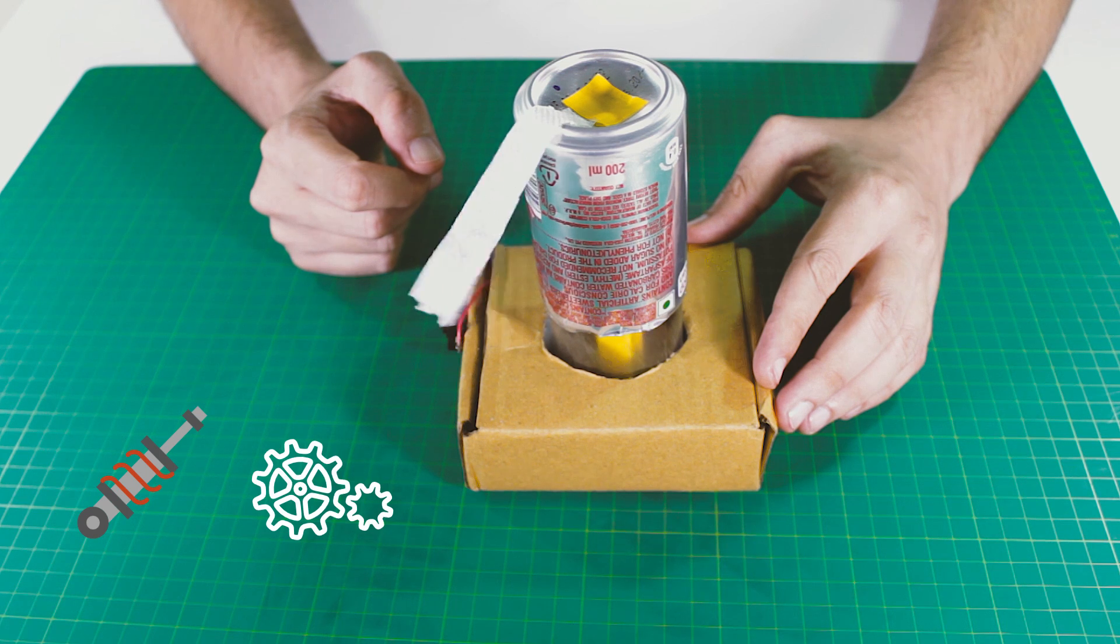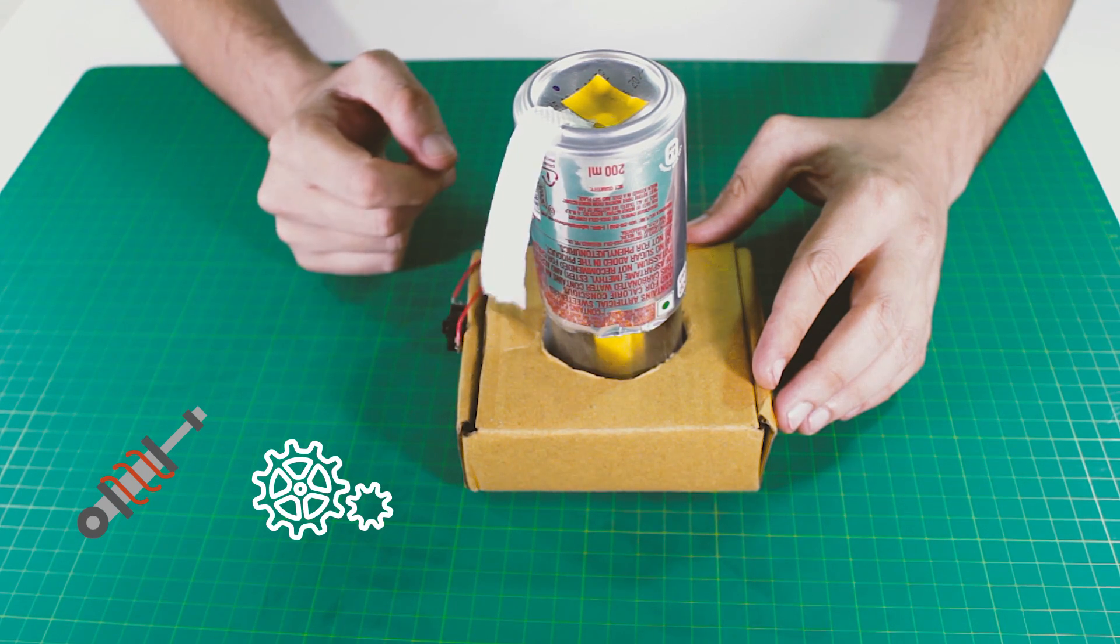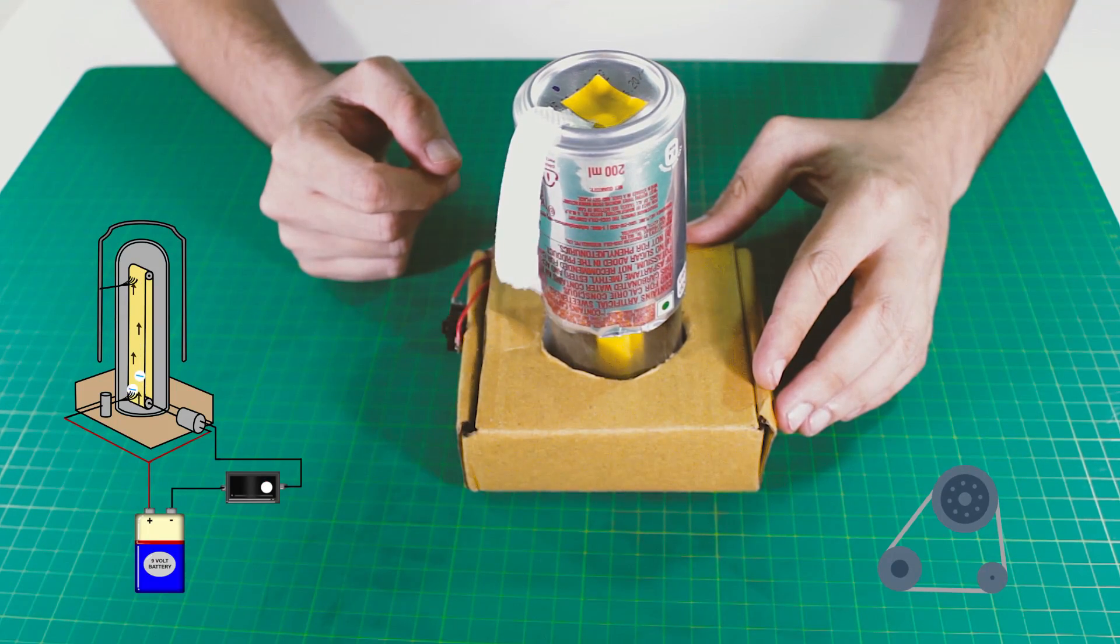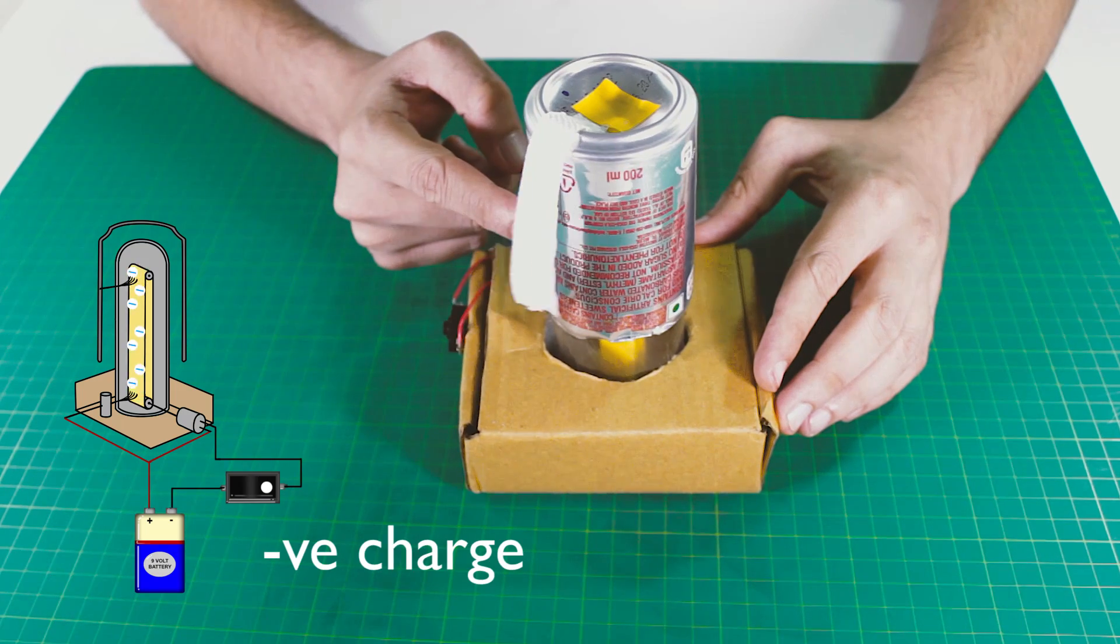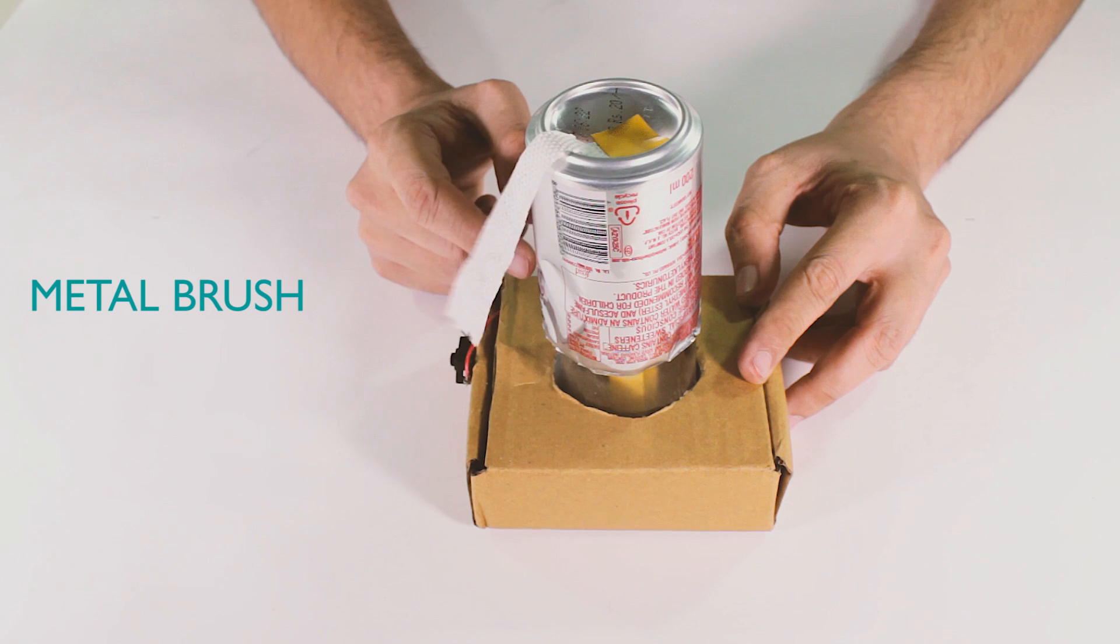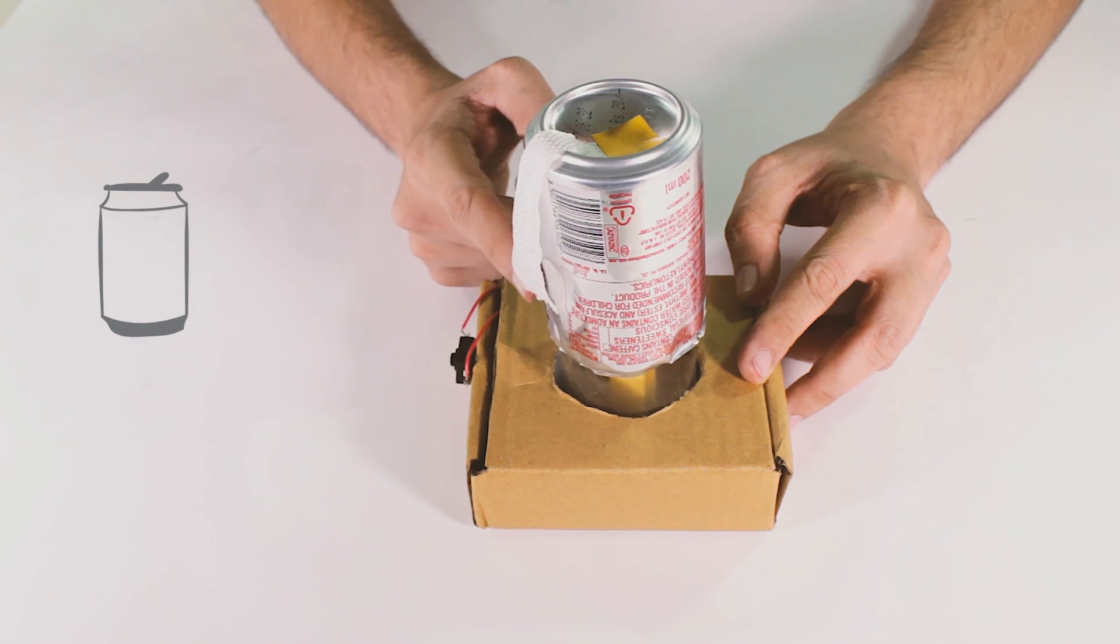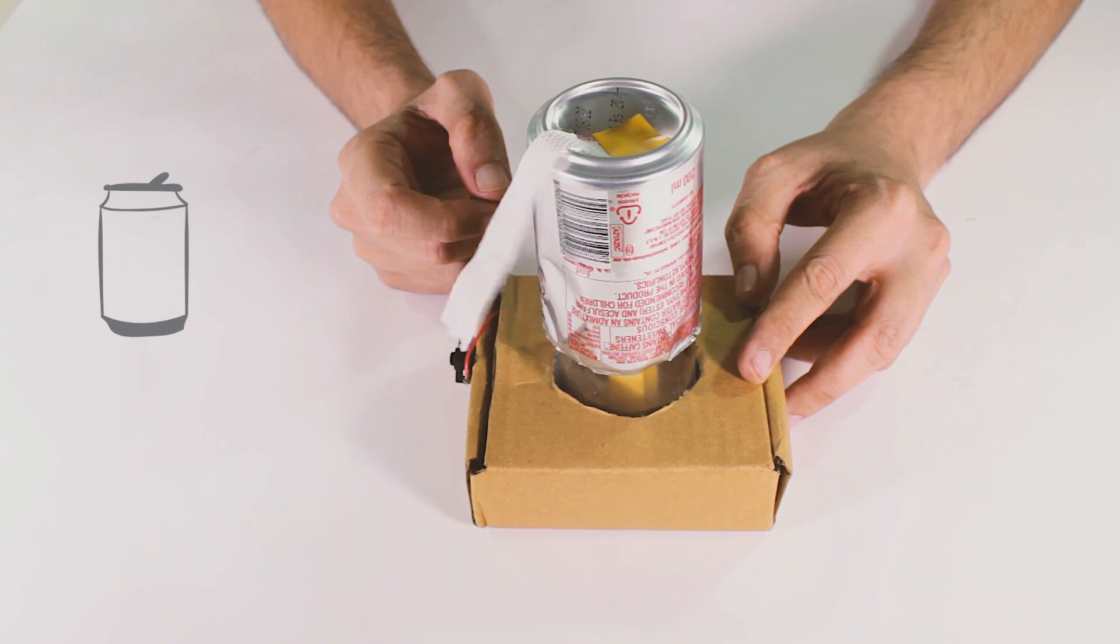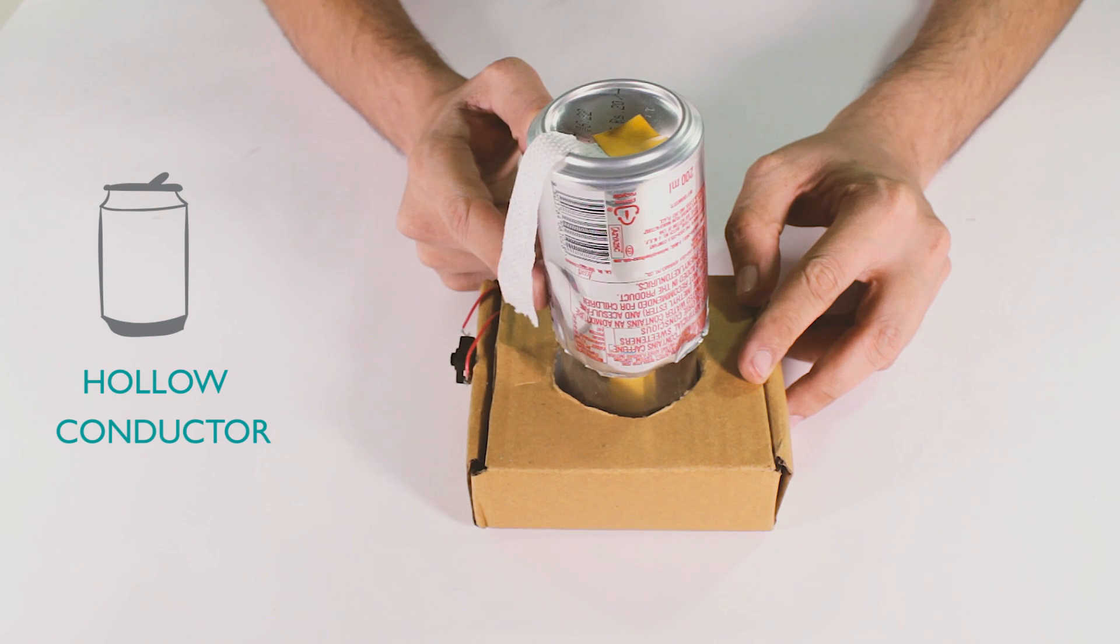During operation, a motor and roller at the bottom of the generator drive a rubber belt around a glass roller at the top, which creates a negative charge on the belt. A metal brush transfers this charge to a soda can, which is able to store a large amount of charge because it is both hollow and a conductor.